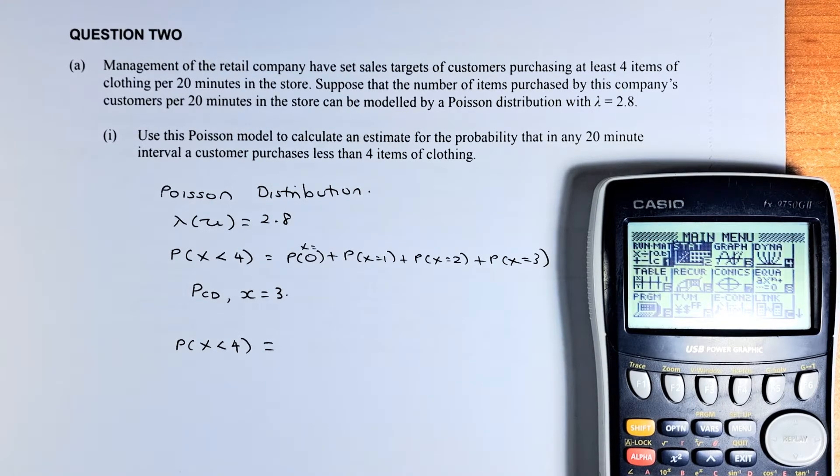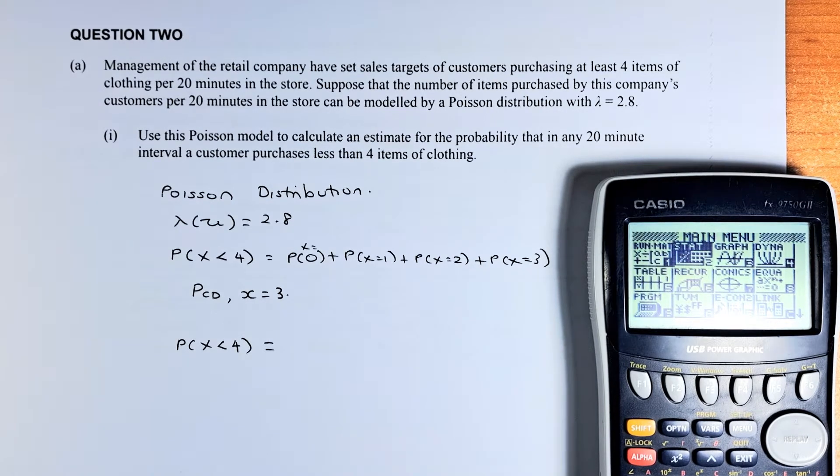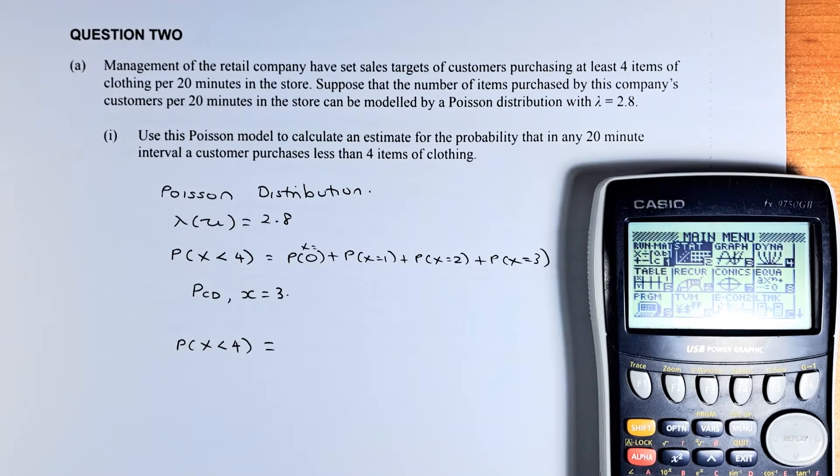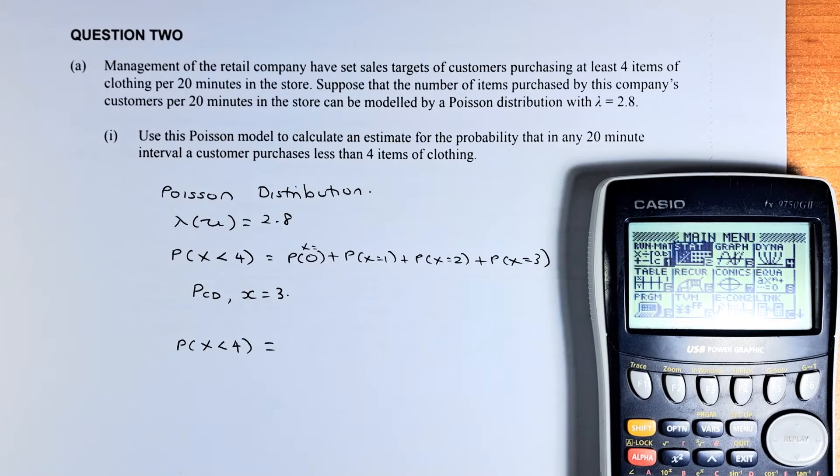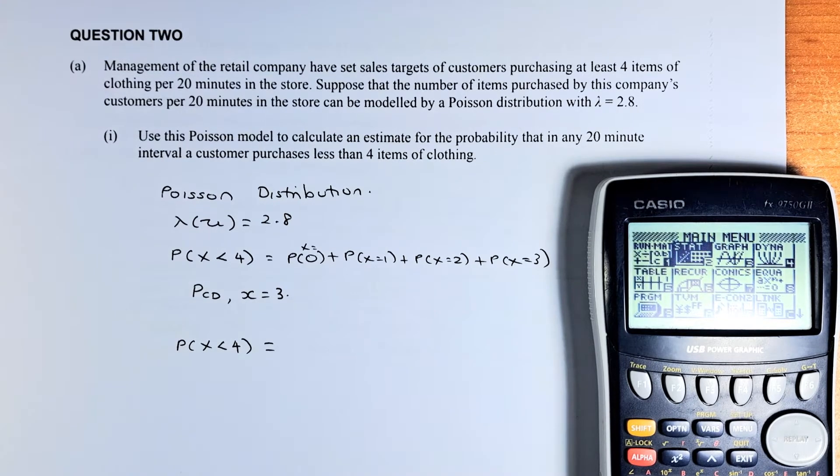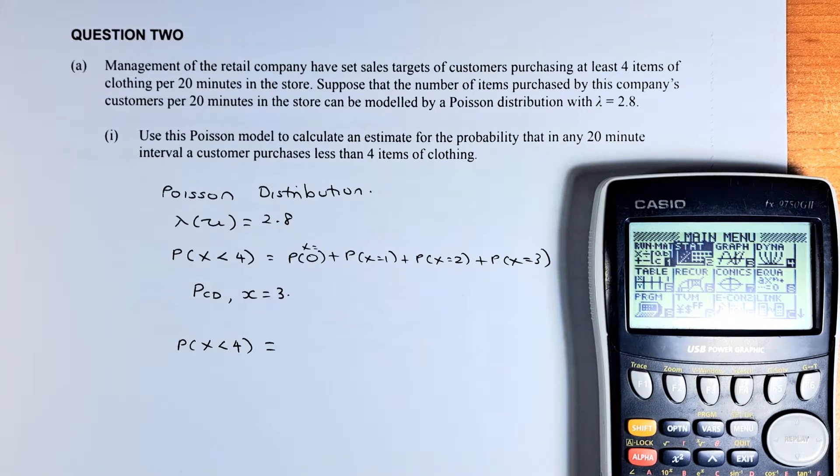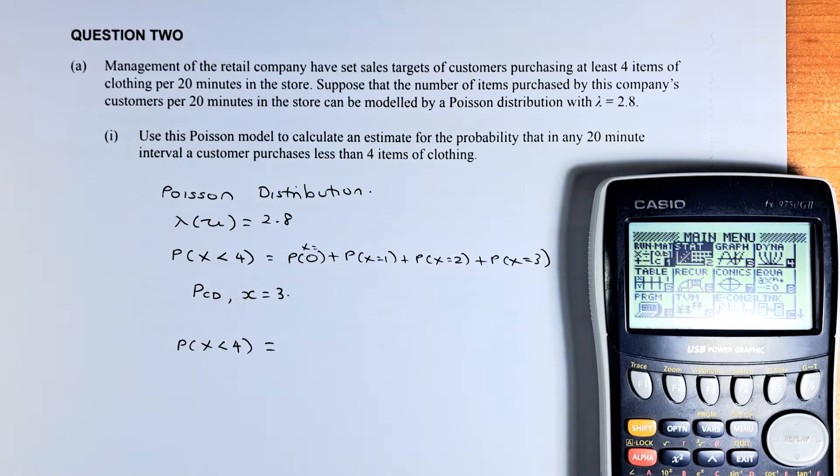Management of the retail company have set sales targets of customers purchasing at least 4 items of clothing per 20 minutes in the store. Suppose that the number of items purchased by this company's customers per 20 minutes in the store can be modelled by a Poisson Distribution with lambda or the mean equal to 2.8. Use this Poisson model to calculate an estimate for the probability that in any 20 minute interval, a customer purchases less than 4 items of clothing.